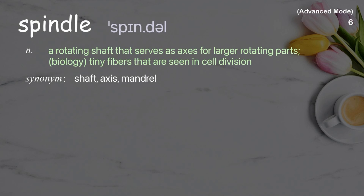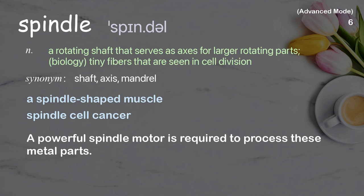Spindle. A rotating shaft that serves as an axis for larger rotating parts. In biology: tiny fibers that are seen in cell division. Examples: A spindle-shaped muscle. Spindle cell cancer. A powerful spindle motor is required to process these metal parts.